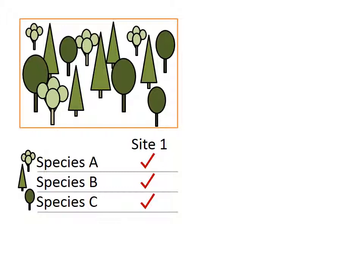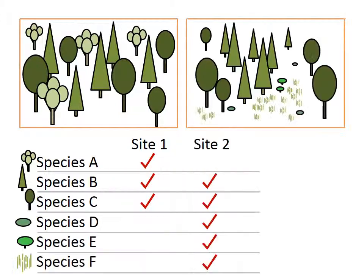Each of the places that we visited will become a site on which we make our observations. We return to the first place, which we call site 1, and list all of the species on the site. There are three species — we'll call these species A, species B, and species C for convenience. Then we go to the second place, which we call site 2, and do the same thing. We put all of the species that we can see on a list. Rather than making a new list, we simply add the new species to the original list, keeping the information for each site in a separate column.